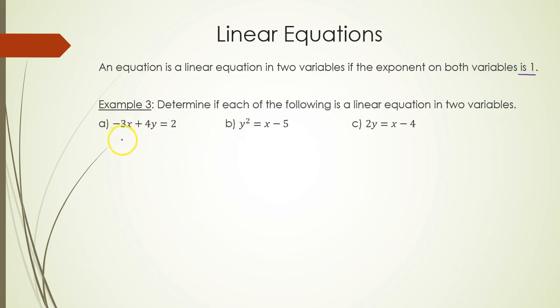So in part A, -3x + 4y = 2, everything is good. x has a power of 1, y has a power of 1. So the answer is yes, it is linear.